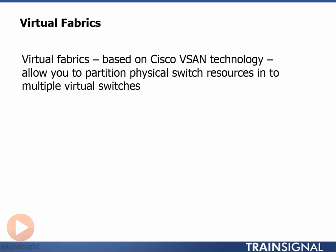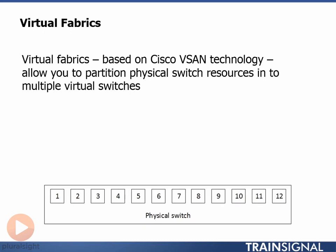Now let's look at an example. On the screen we've got a 12-port physical switch. Now let's carve this up into two virtual switches. First of all, we've picked the ports that we want to be part of the new virtual switch. We'll pick ports 1, 2, 3 and 9, and we've highlighted them in green on the slide. We then make these ports part of Virtual Switch A.